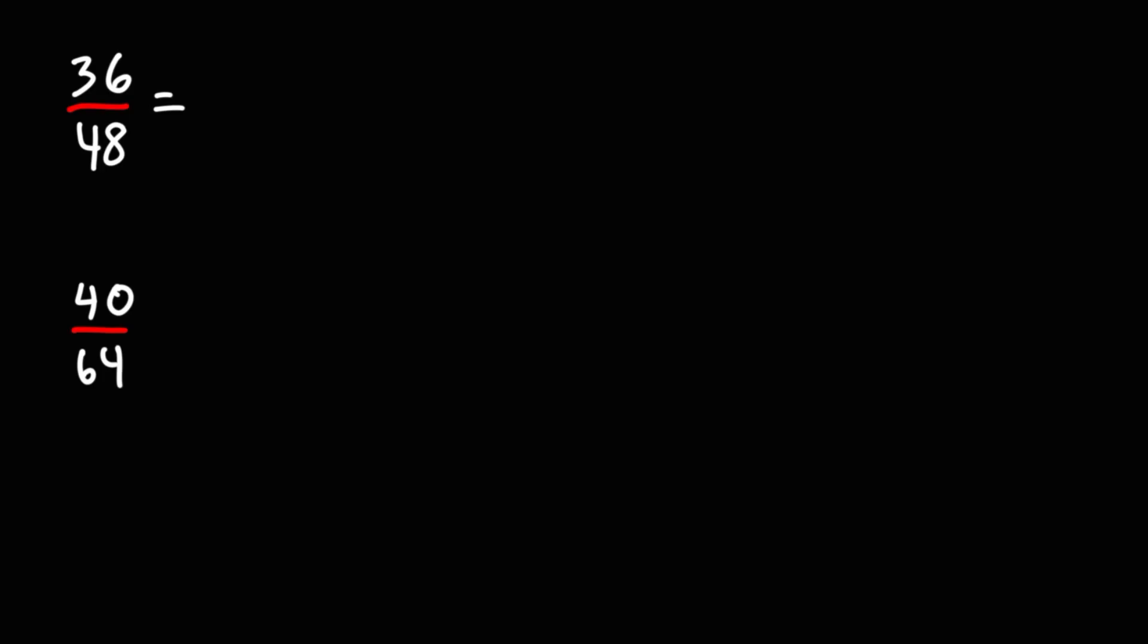Notice that both numbers are even. When you see that you could start by dividing the top and the bottom number by 2. Whatever you do to the top you must also do to the bottom of the fraction. 36 divided by 2 is 18. 48 divided by 2 is 24.